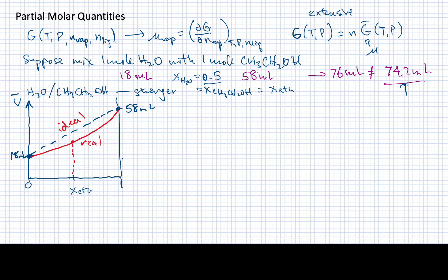I want to make a parenthetical note here: we can also have cases where, when we mix two things together, their intermolecular forces with each other are weaker than they are with themselves. In that case, we would end up with a curve that comes up above the expected line. So not all mixtures behave like water and ethanol — it may not be true for water mixed with some other substance.